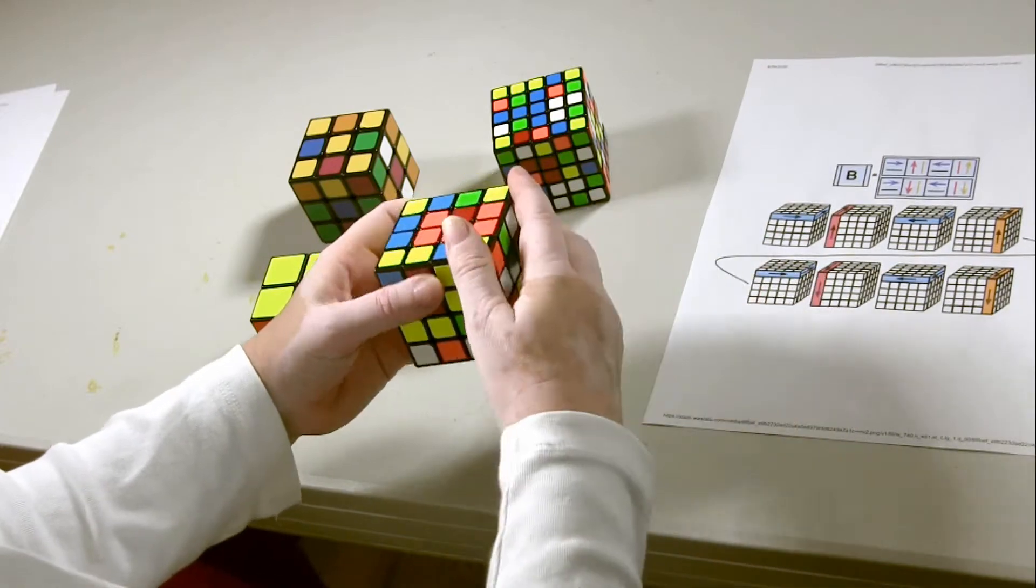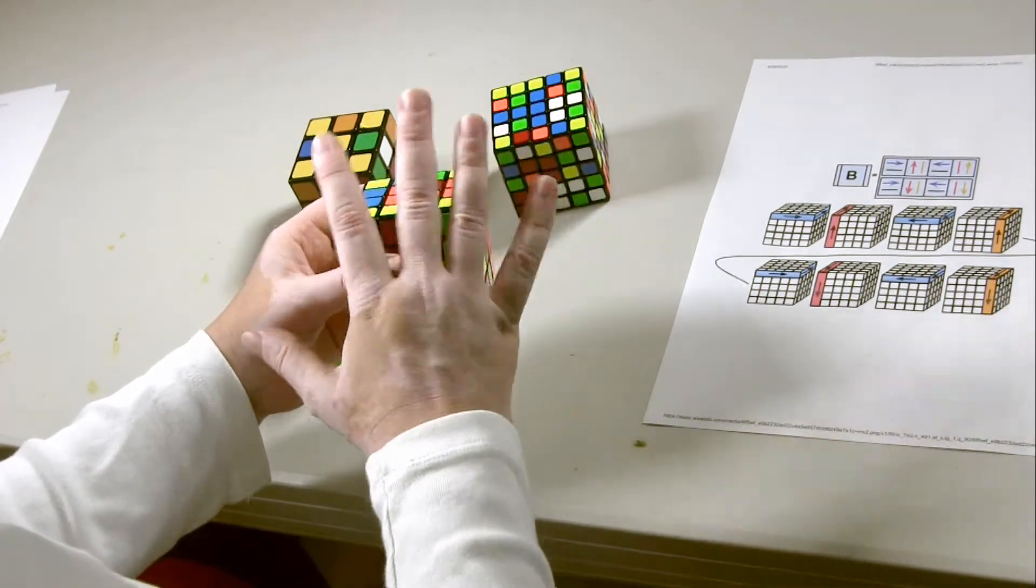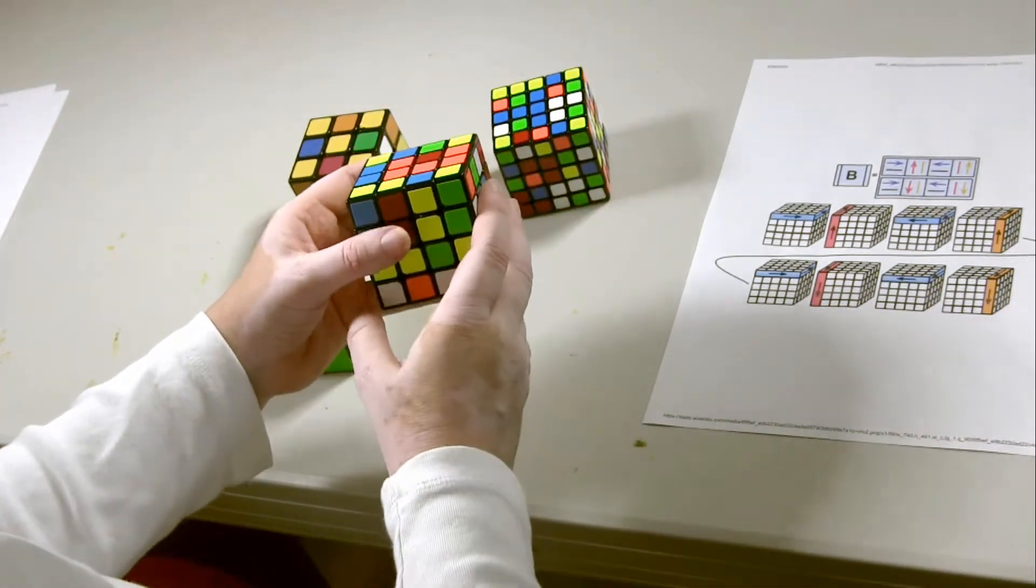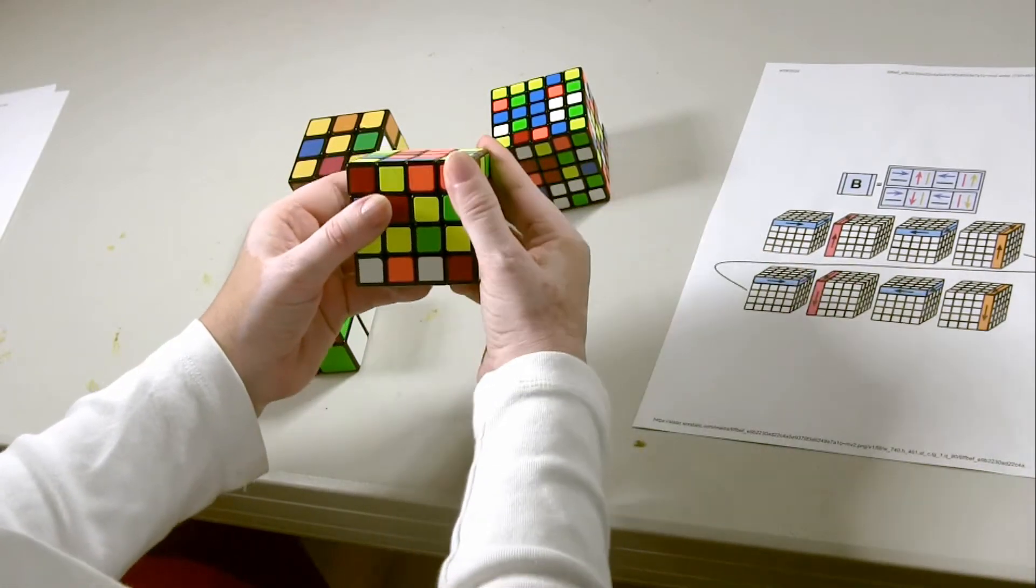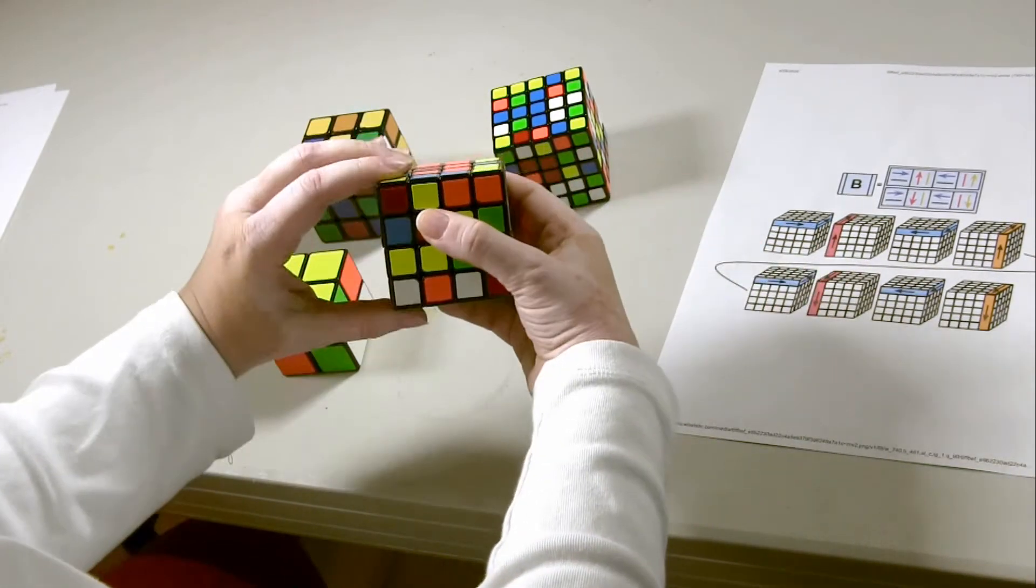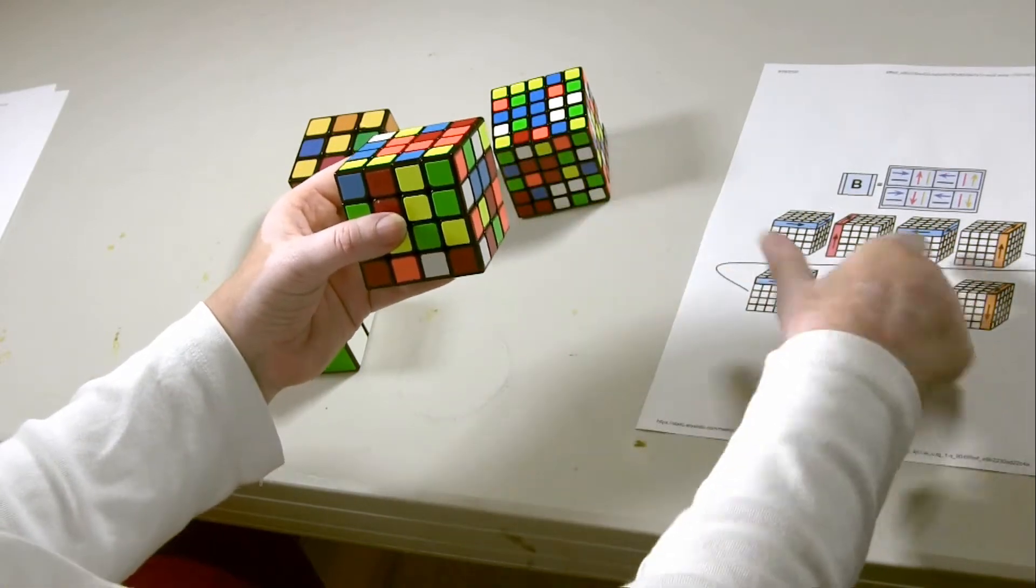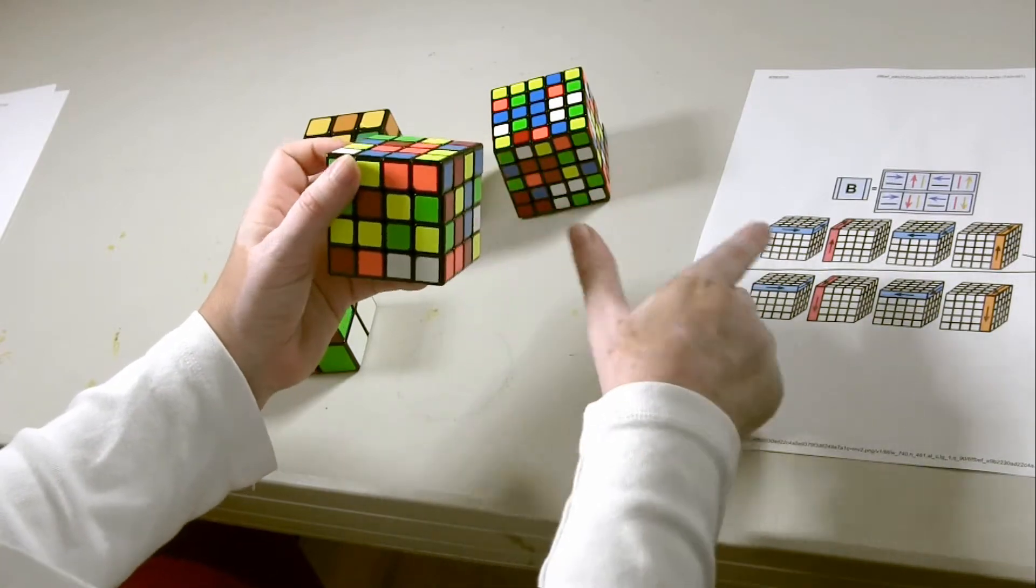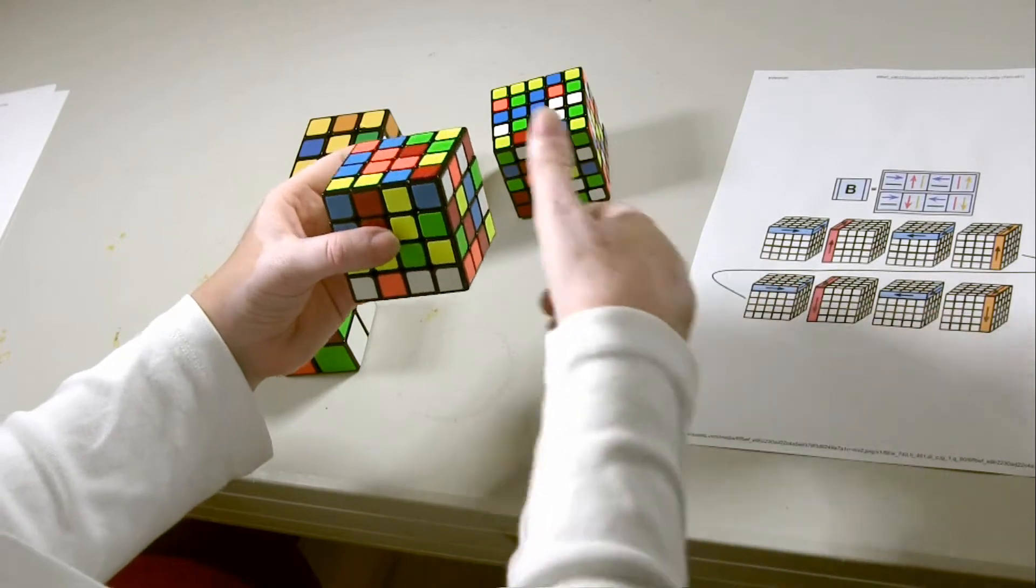I'm going to do Formula B, which is going to rotate these three corners. And after I do Formula B, we'll do Formula A to bring it back to the top. So, our first move is away, second move is left up, third move is back, fourth move is right up, away, down, back, and down.